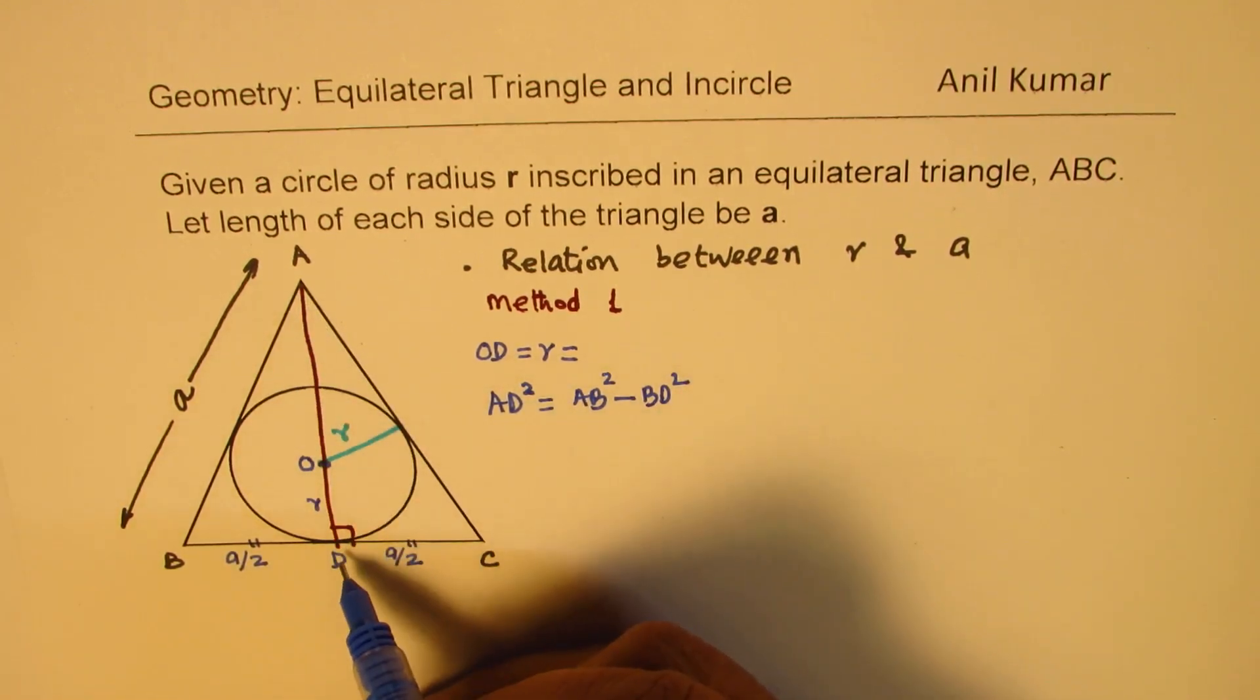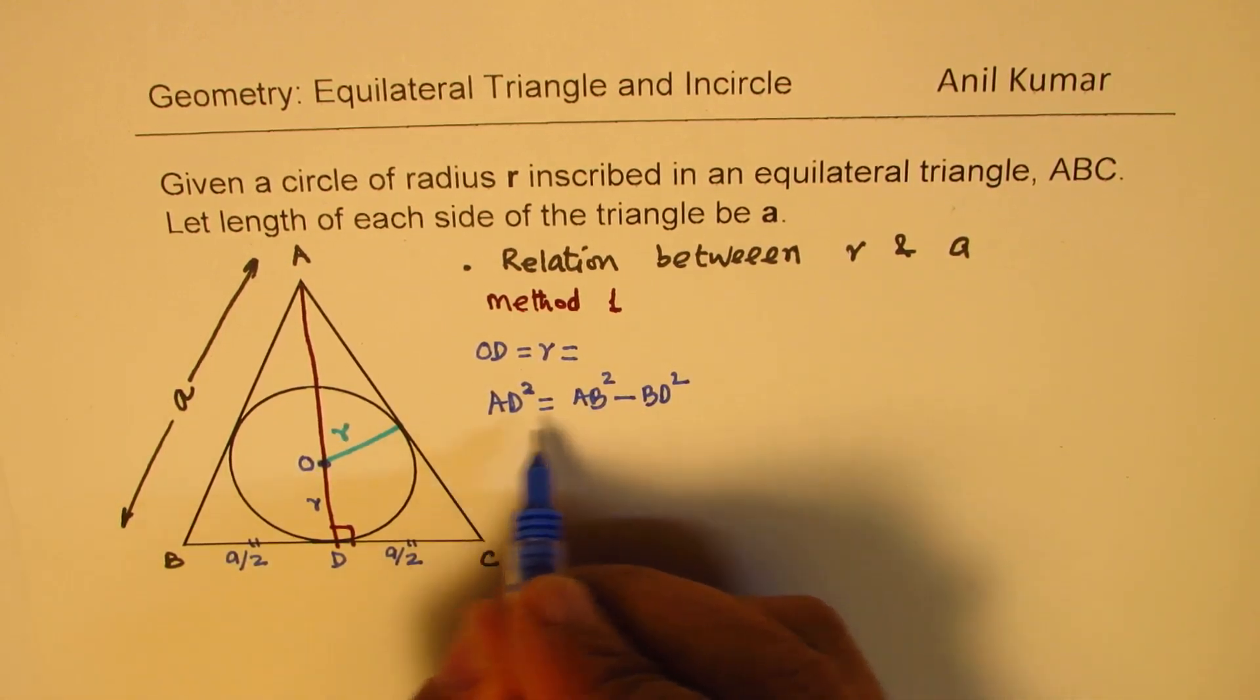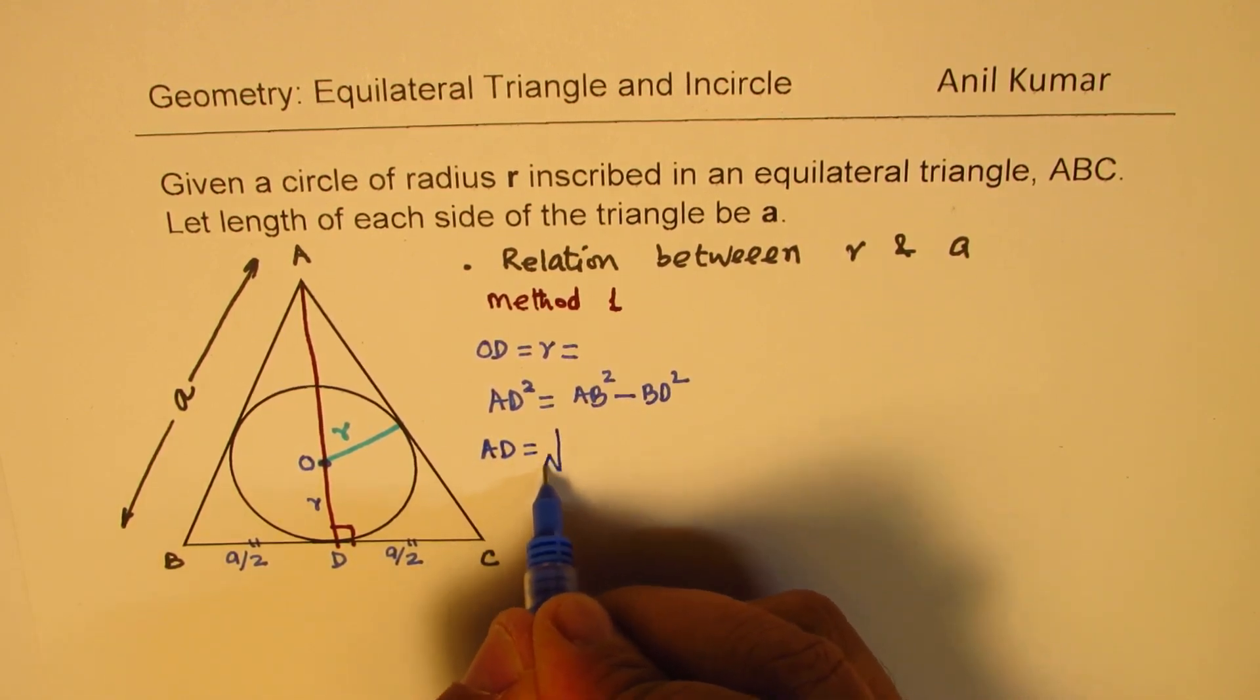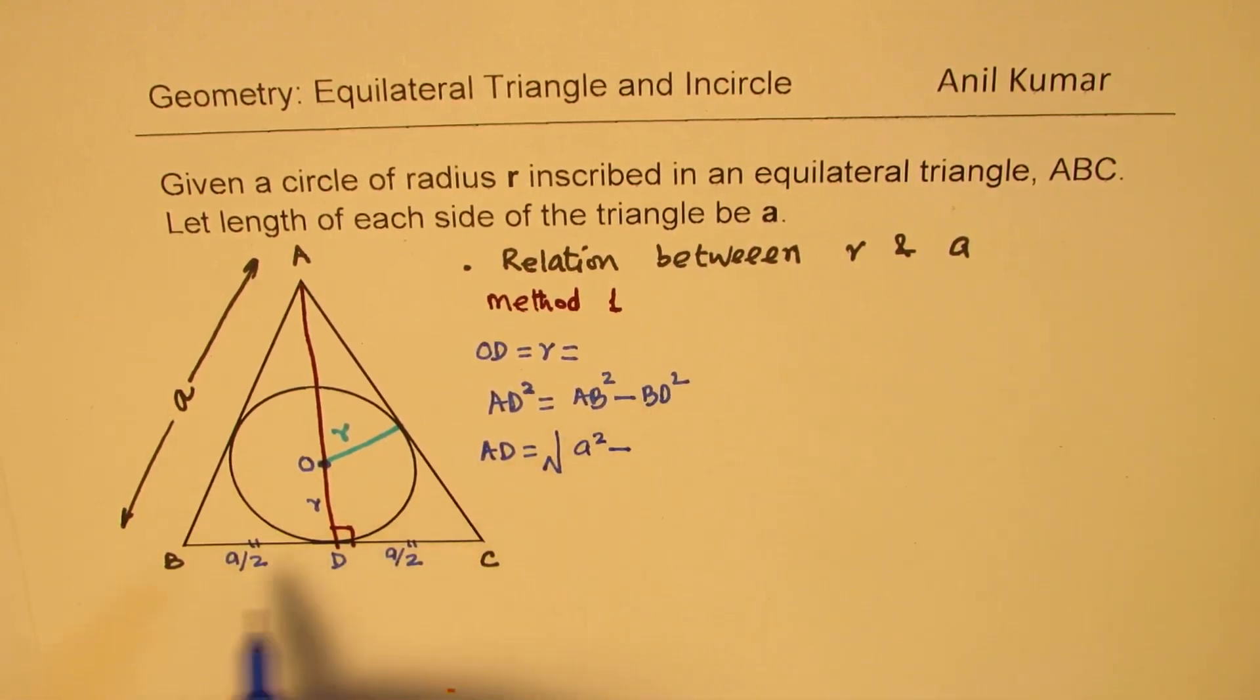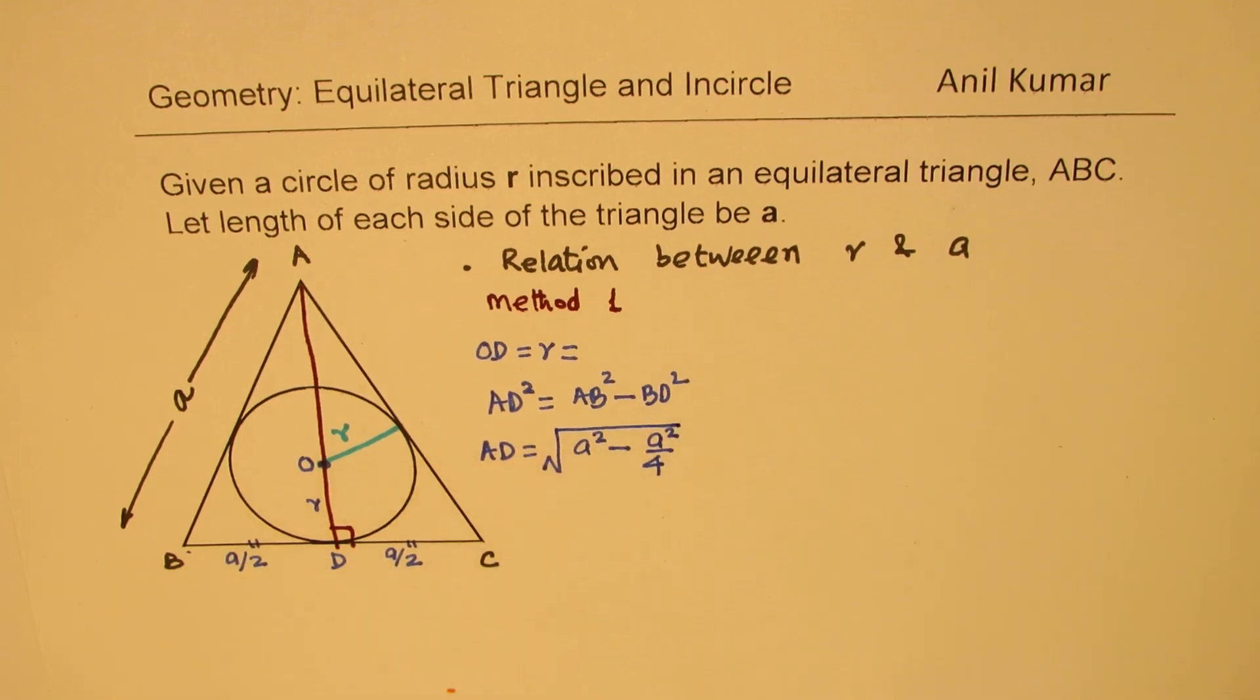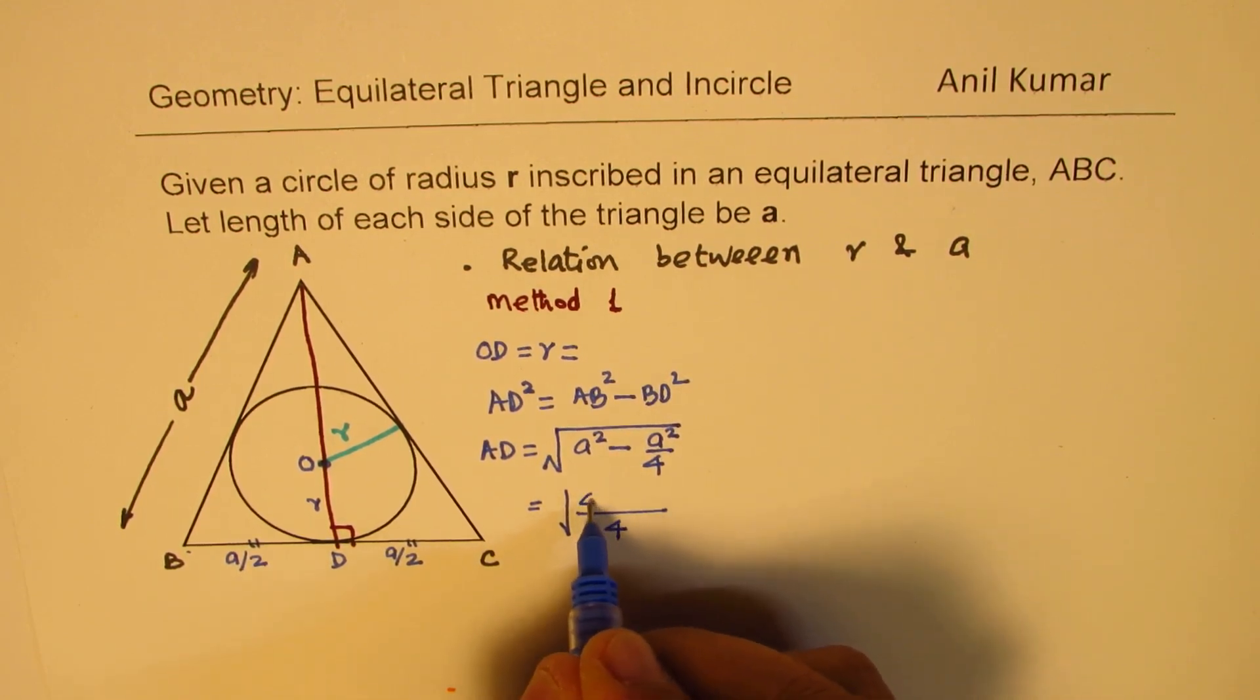So from here, we get that AD is equal to square root of AB square. AB square is a squared minus BD square, which is a by 2. So if you square them, we get a squared over 4. Now that gives you, 4 is the denominator, common denominator, 4a squared minus a squared.